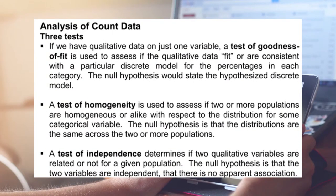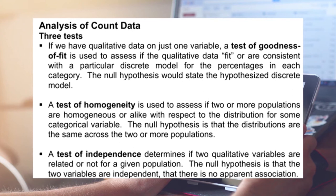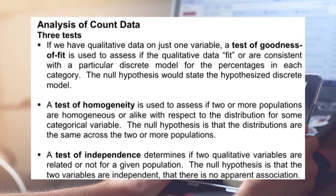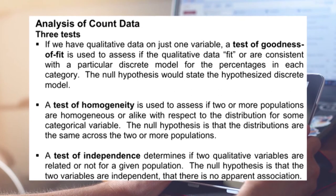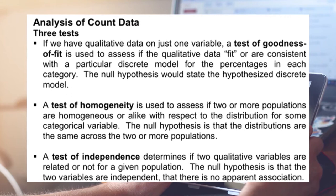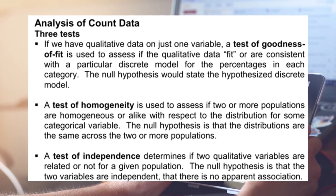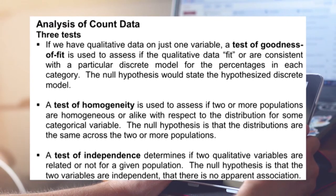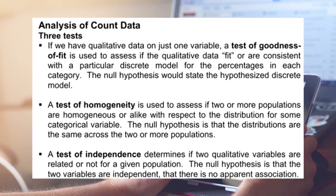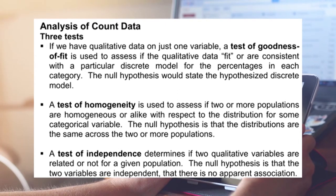There are three tests for analysis of count data. First, if we have qualitative data on one variable, a goodness of fit test is used to assess whether the data fit a particular discrete model; the null hypothesis states the hypothesized discrete model. Second, a test of homogeneity assesses whether two or more populations are alike with respect to the distribution of a categorical variable; the null hypothesis is that the distributions are the same across populations. Third, the test of independence determines whether two qualitative variables are related; the null hypothesis is that the two variables are independent with no apparent association.